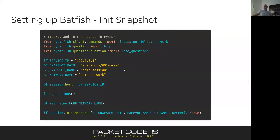With the installation done, you do a couple of imports within Python, then tell Batfish where your snapshot folder of network configs resides, give it a snapshot name and a network name — you can have multiple snapshots per network. You tell it the IP address of the container, load your questions, set your network, and initialize the snapshot with the path and snapshot name. At that point you're off to the races and can start running queries against Batfish.